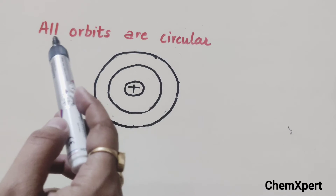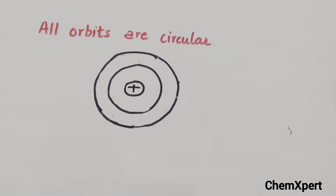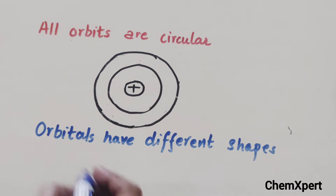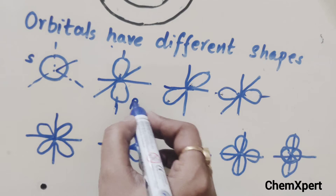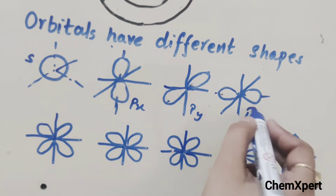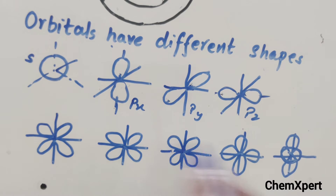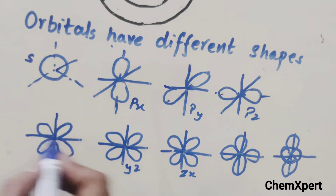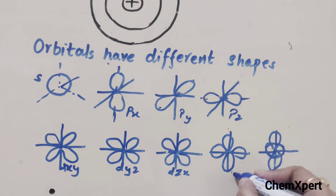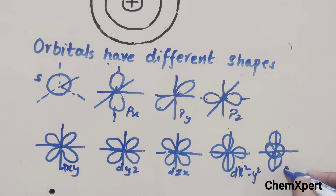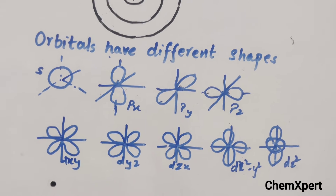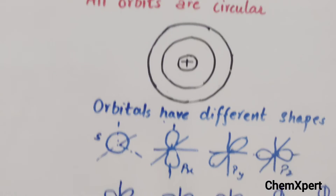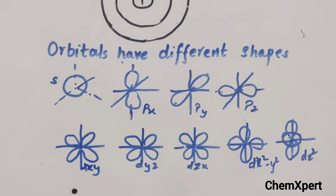An important difference is that all orbits are circular in shape, whereas orbitals have different shapes. For example, the s orbital is spherical in nature. The p orbital exists in px, py, pz directions. The d orbital has five possible orbitals: dxy, dyz, dzx (which are in between the axes), dx²-y² (along the axis), and dz².